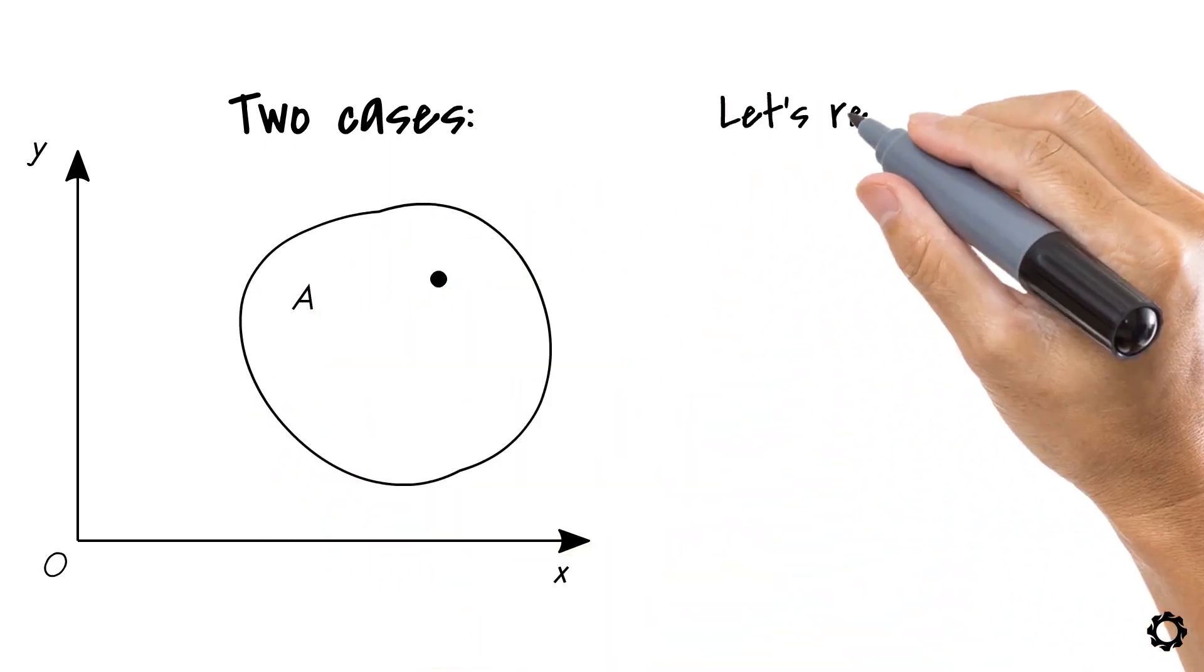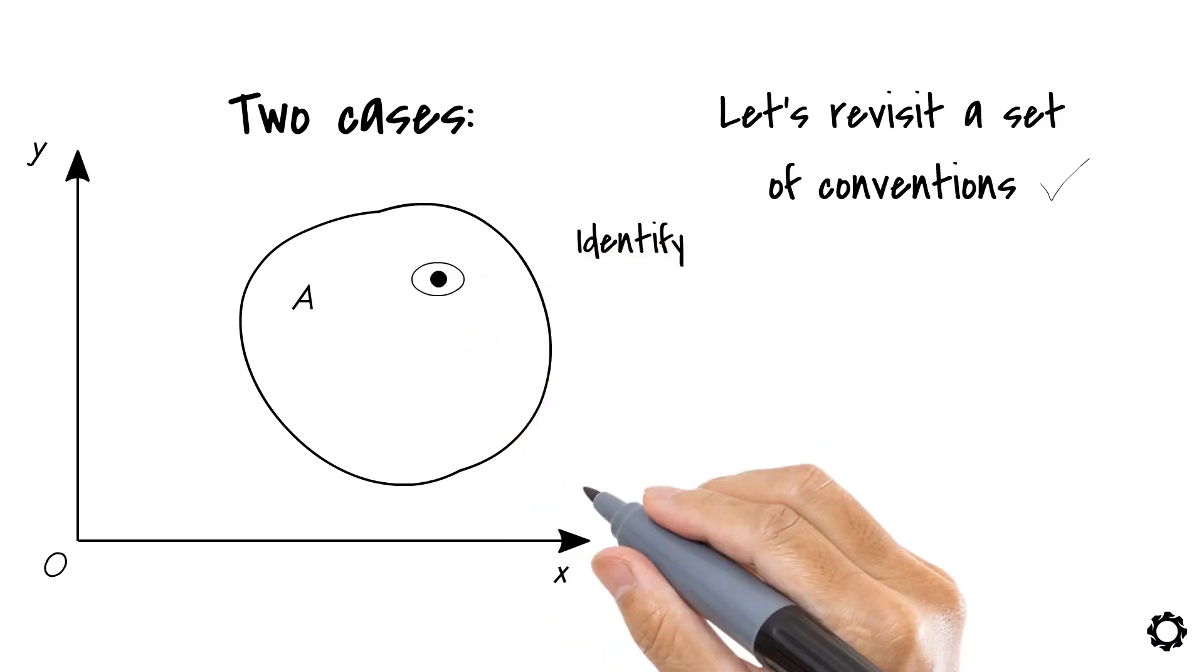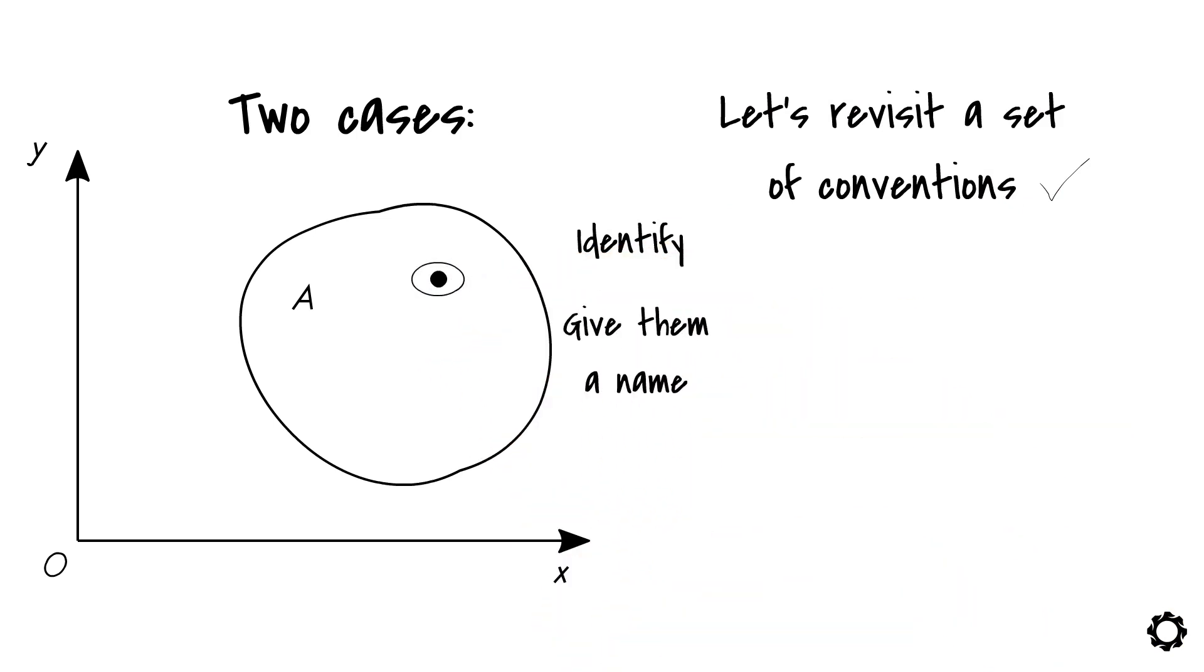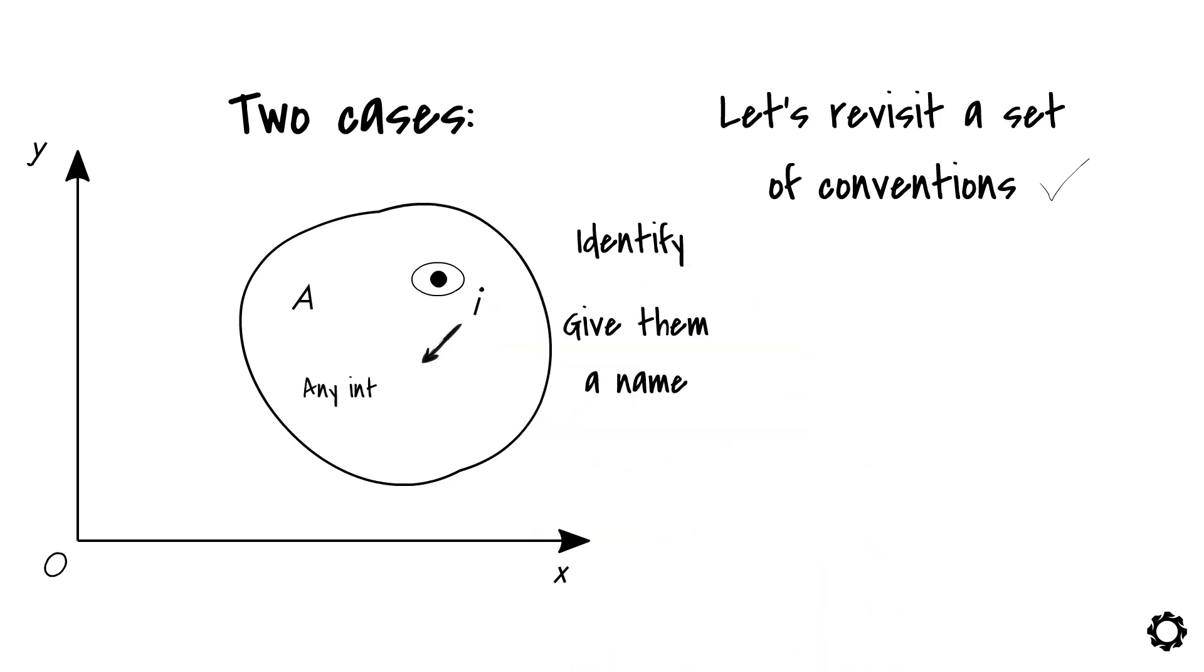Additionally, let's revisit a set of conventions which are valid throughout the course. As we need to identify each of these interesting points, we should give them a name, a unique name. We will be talking about point i, where i can be any integer from 1 to infinity. Another convention is that the vector quantities will be represented in bold, and scalars not.